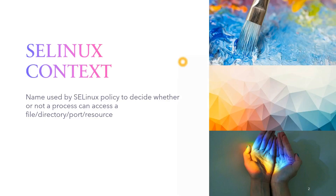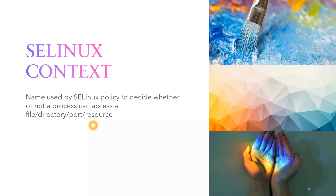So basically, what is SE Linux context? SE Linux context is nothing but a name used by SE Linux policy to decide whether or not a process can access a file, directory, port, or any other resource. It's like a name given to a file — just like how we identify every person with a unique name, for every file there will be an SE Linux context which uniquely identifies that file.